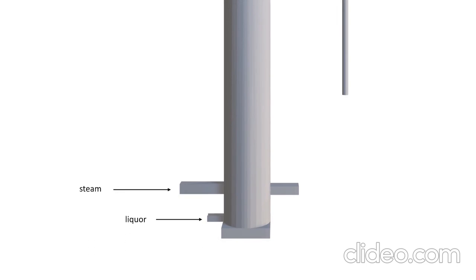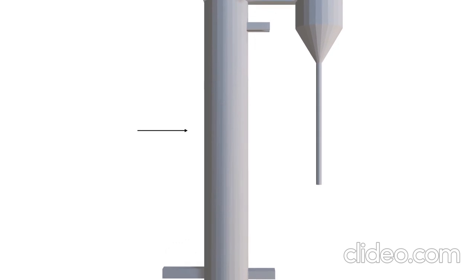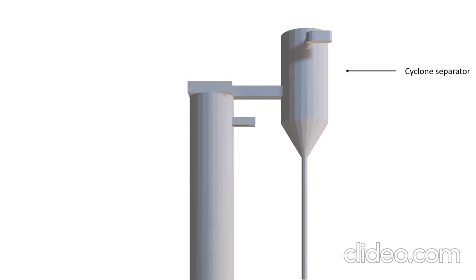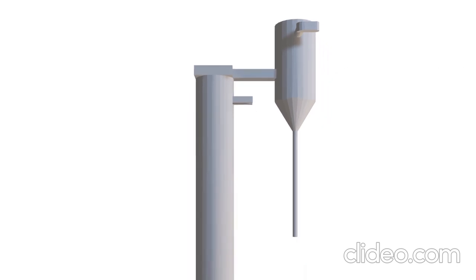Rising film evaporator. Rising film evaporator system includes a steam inlet, liquor inlet, a chamber containing tubes that steam passes through, and a cyclone separator.